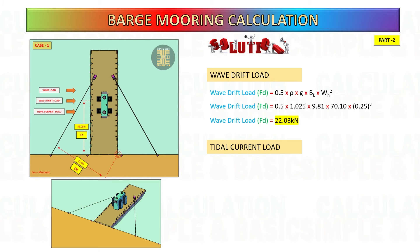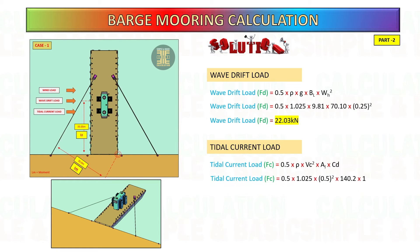Next, calculate the tidal current load. To get this: 0.5 multiplied by the density of sea water, current velocity squared, barge submerged area, and shape coefficient.